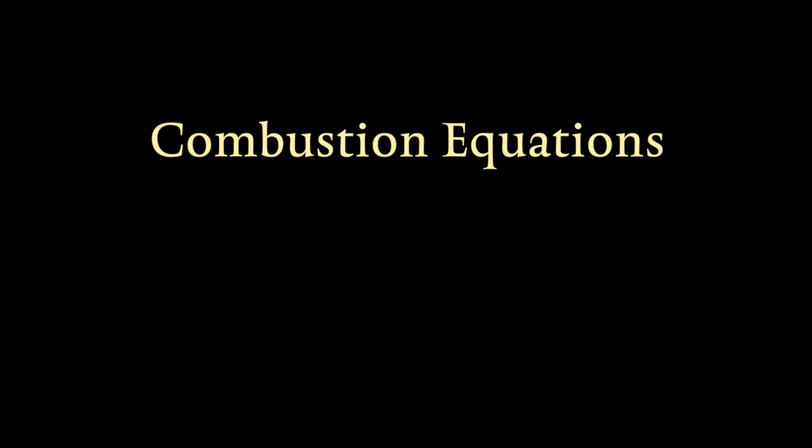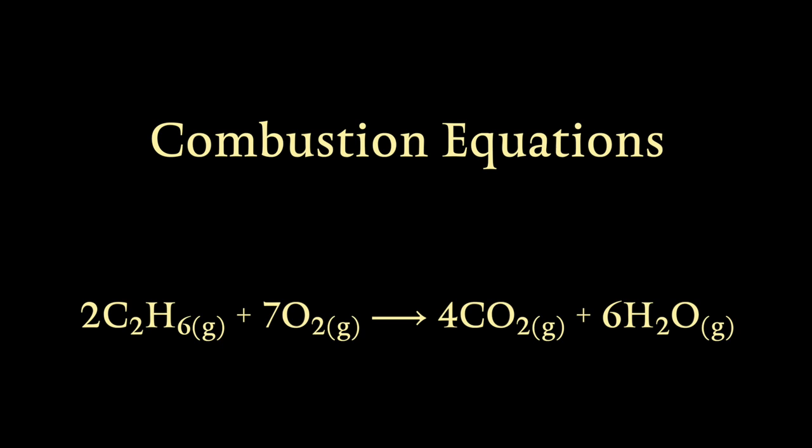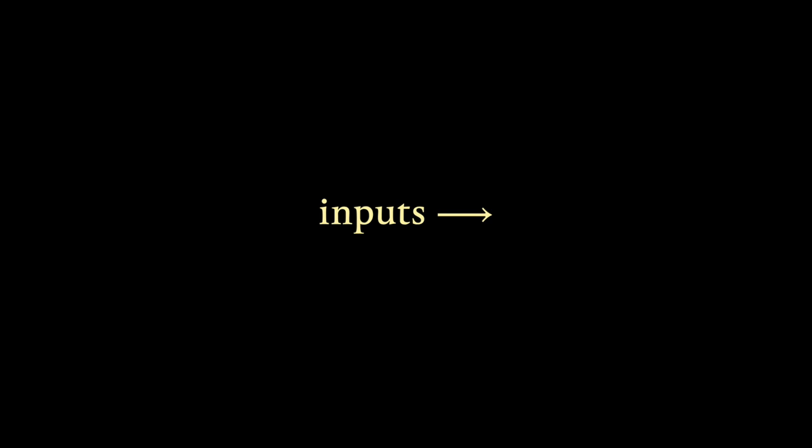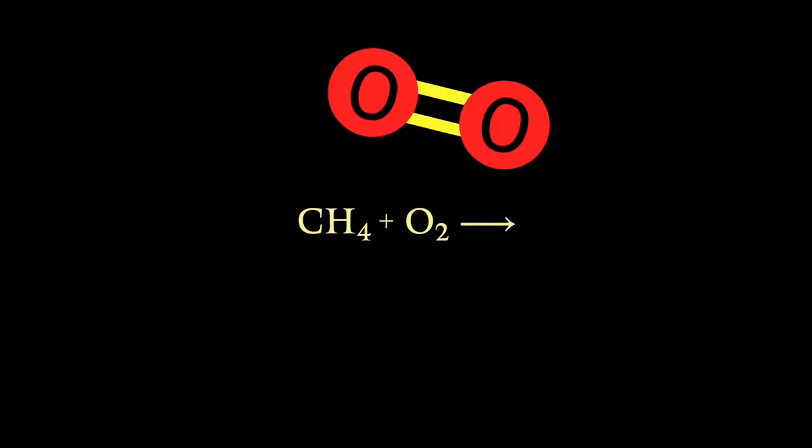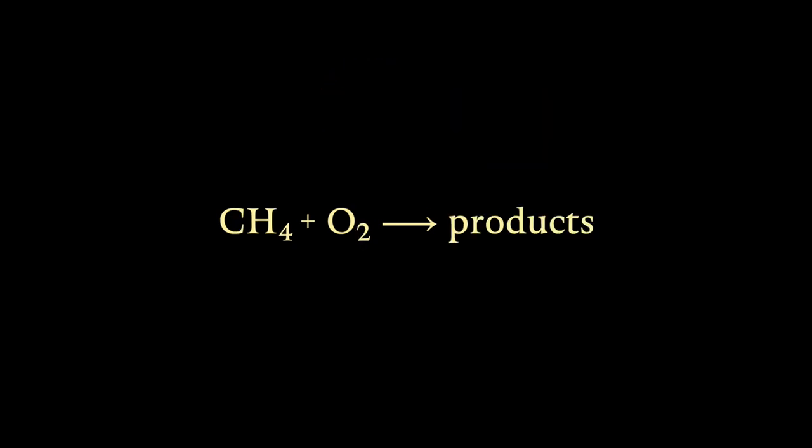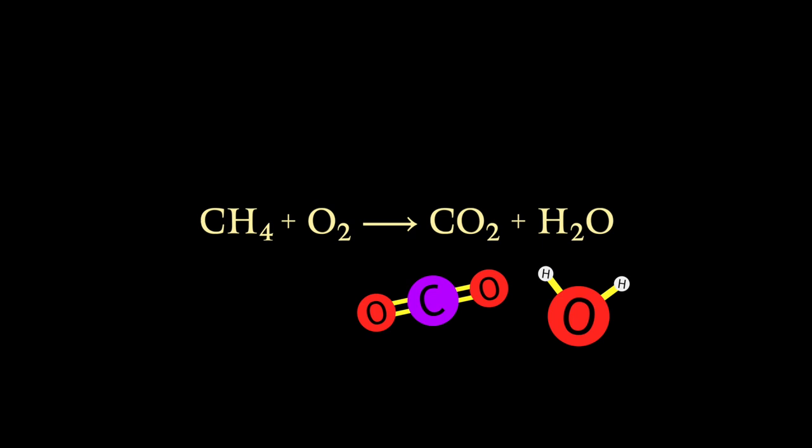Now you should have the knowledge required to tackle some combustion equations. An equation like this is a visual representation of a real chemical reaction. On the left side, we write the chemical formula of each original substance that went into the reaction. For combustion, it's always a fuel plus oxygen. For this example, let's use methane as the fuel. The chemical formula for methane is CH4, one carbon atom bonded to four hydrogen atoms. The chemical formula for atmospheric oxygen is O2, as I said before. On the right side of the equation are the products. For complete combustion, as we discussed, the products are always carbon dioxide and water vapor.